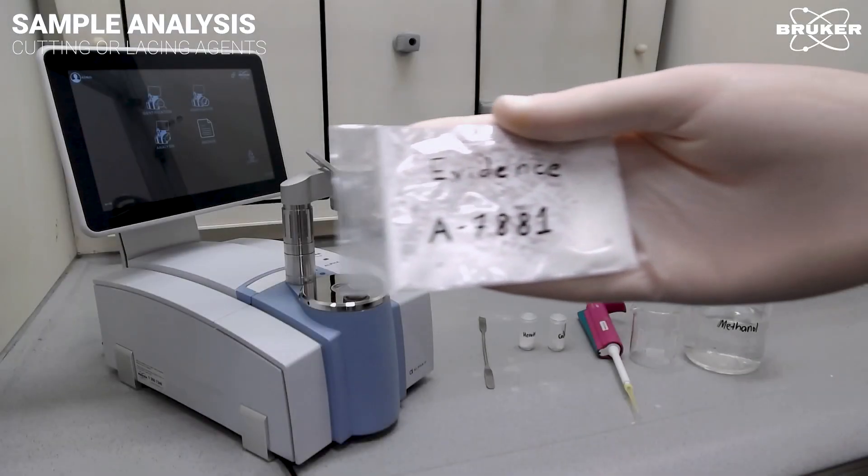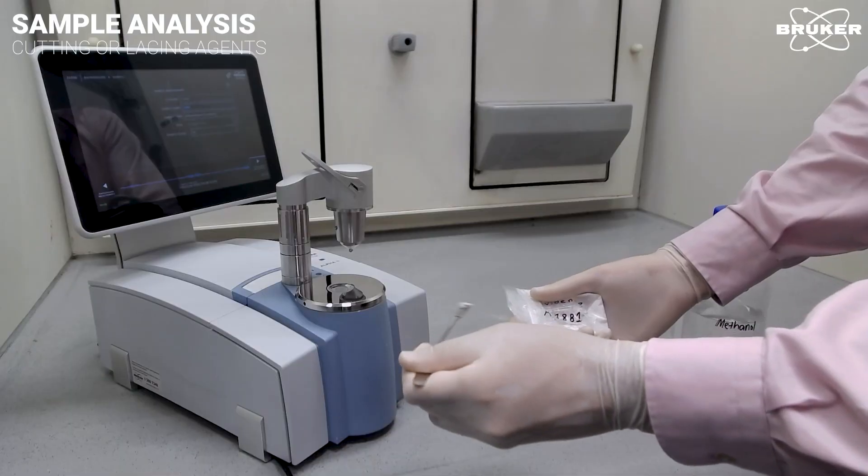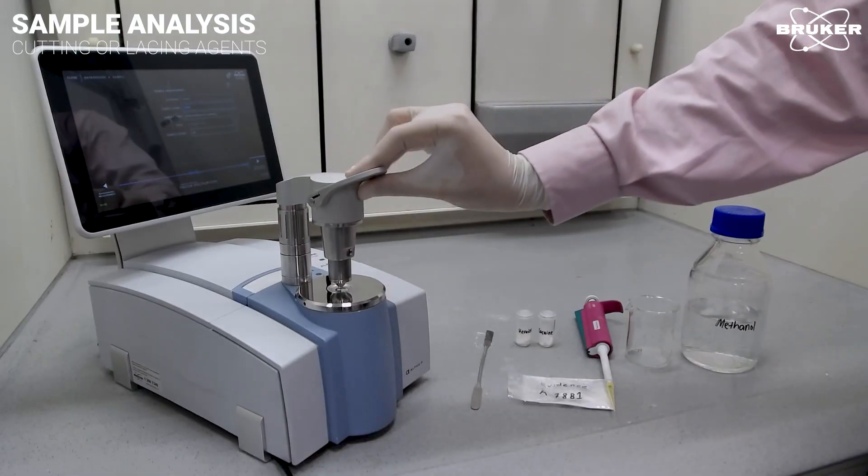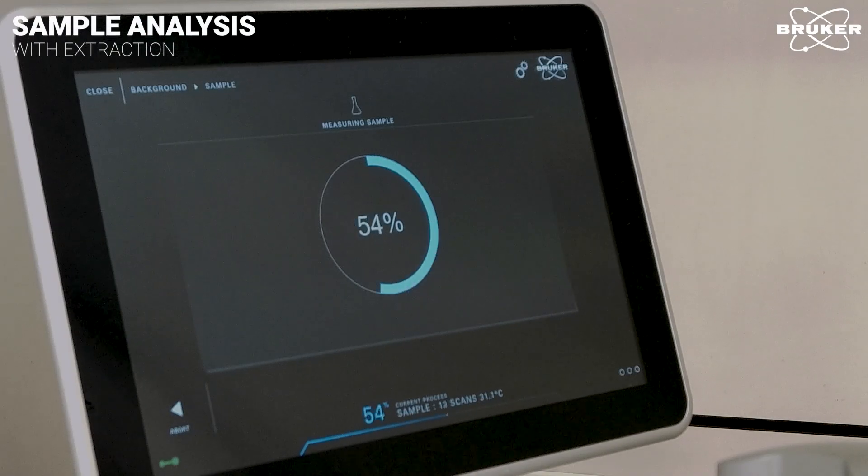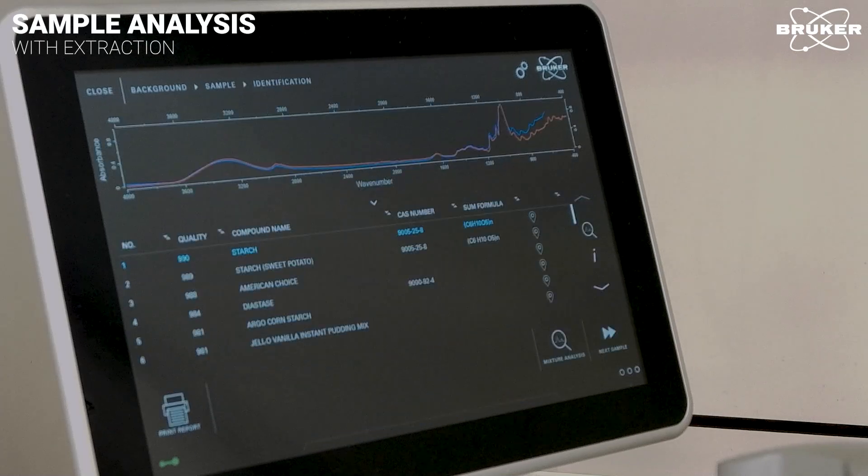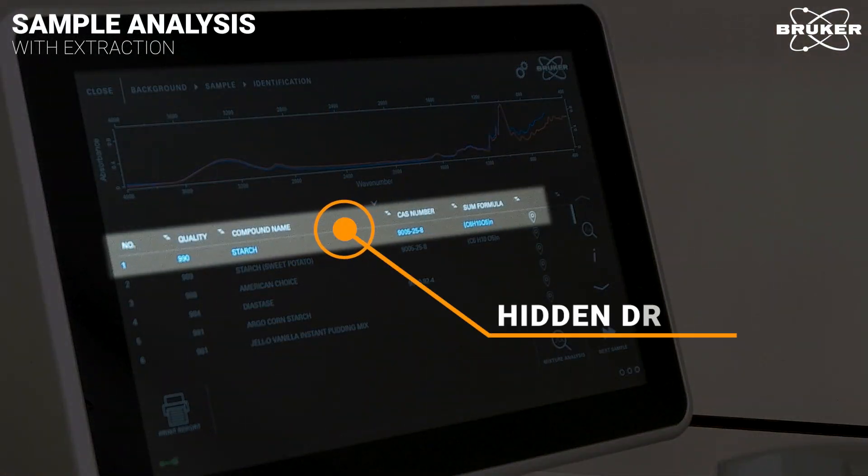However, analysis becomes more complicated when illicit drugs are concealed for trafficking. Small amounts of cocaine and other drugs might be hidden in starch, flour, or sugar. In such cases, IR spectra are usually dominated by the hiding substance.